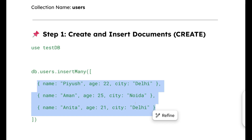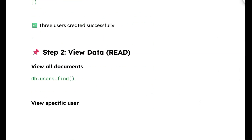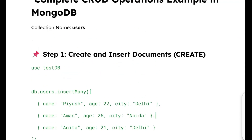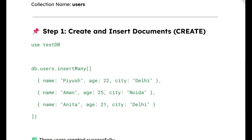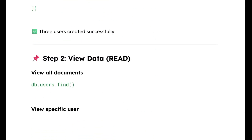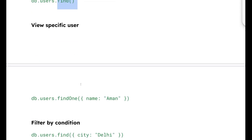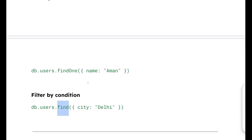Now let's move forward towards the Read operation. This is the Read part — where we view the data, how we see data that is already inserted. For that purpose, we use the find method. To check any specific document, we use findOne. The important thing is that we need to put a filter inside it. The filter takes out the first document which matches the particular condition given in the filter.